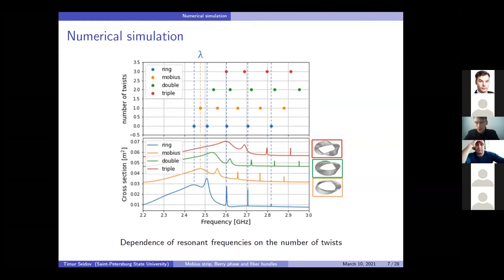From various calculations, which Nikolai will tell you about later, we can demonstrate that this effect is caused precisely by the appearance of an additional twist, and not, for example, by a change of the length of the Möbius strip.